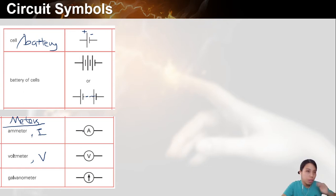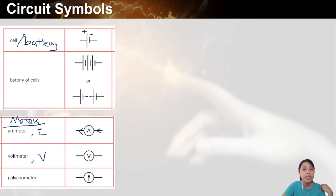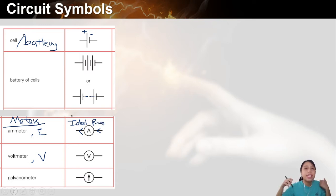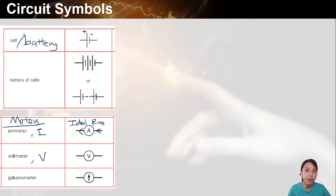For current, the thing to remember is: the ammeter — you want the current to flow through you. So ideally your ammeter will have zero resistance, so that everything can flow through and you can measure how much is flowing through at that point.